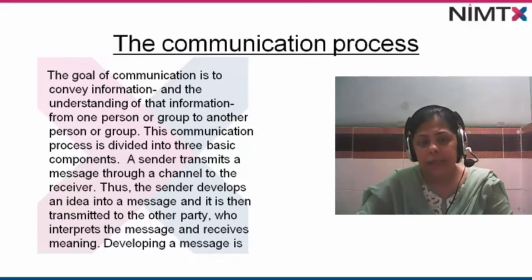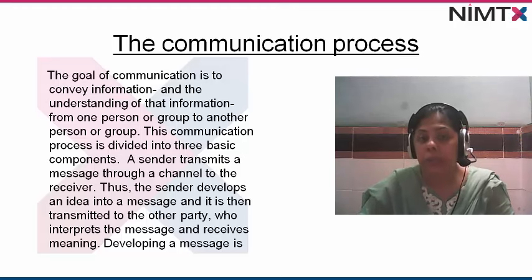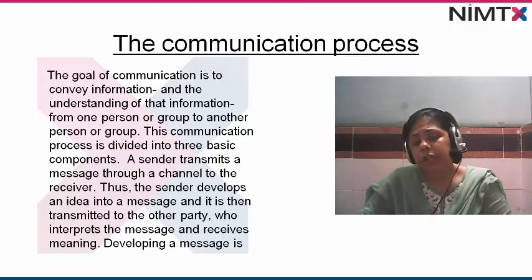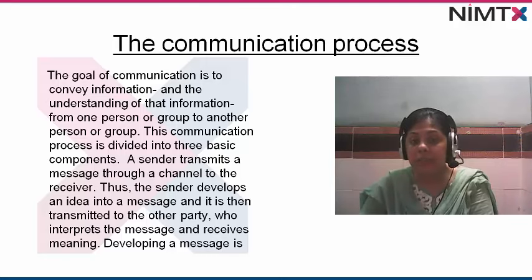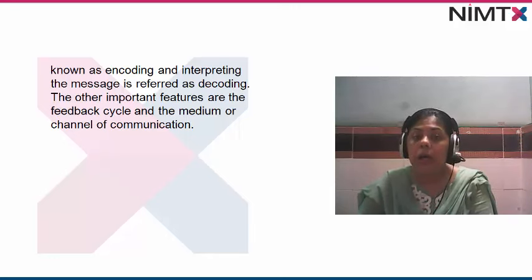The goal of communication is to convey information and the understanding of that information from one person or group to another person or group. If I tell you something and you don't understand it, the communication process doesn't have any meaning. This communication process is divided into three basic components: a sender transmits a message through a channel to the receiver. The sender develops an idea into a message, which is transmitted to the other party who interprets it. Developing a message is known as encoding and interpreting the message is referred to as decoding. Other important features are the feedback cycle and the medium or channel of communication.